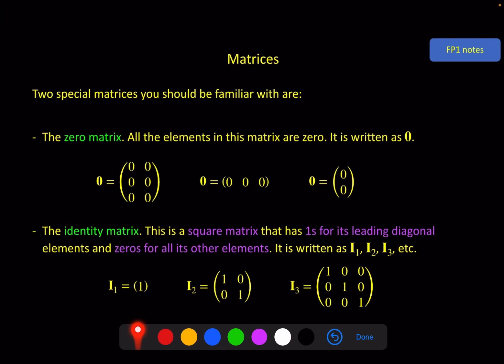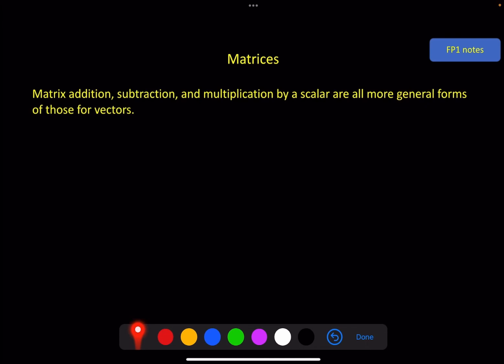Okay, that's most of the definitions. Now let's have a look at some of the operations. We've got matrix addition, subtraction, and multiplication by a scalar. And they're all more general forms of what we had in the starter with vectors. So if you're happy with your vector work, these should be quite straightforward for you.